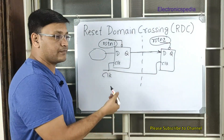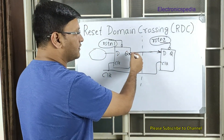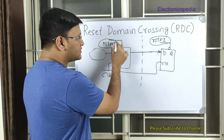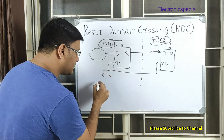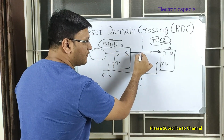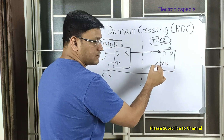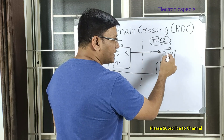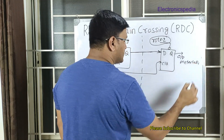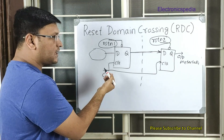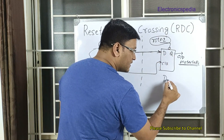What is the issue here? The clock is the same and data is going from one flop to another, but the resets are two different resets. If reset_n2 changes during the window when the signal is being transferred from the first flop to the second flop, the data can get corrupted and the output can become metastable. With respect to reset, metastability is always with respect to the de-assertion of the reset.